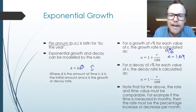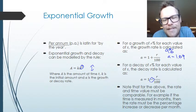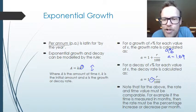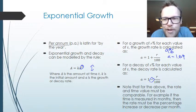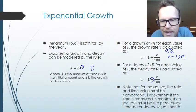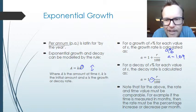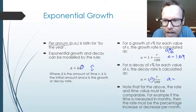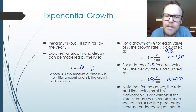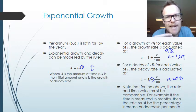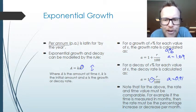For a decay rate we do exactly the same thing, except we subtract the rate: 1 minus R over 100. So if decreasing by 9%, we'd have 1 minus 9 over 100, giving a decay rate of 0.91, and that multiplies each time. The rate and time value need to be comparable — they need to be in the same units.